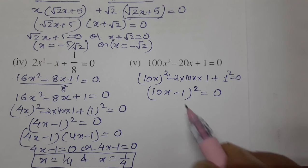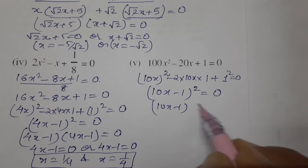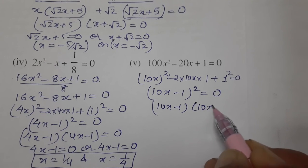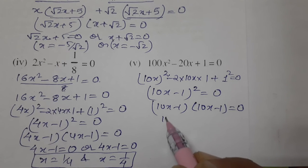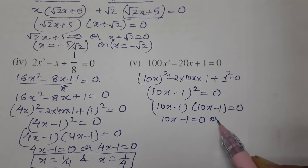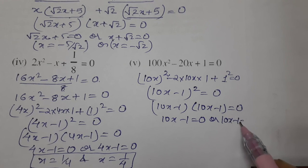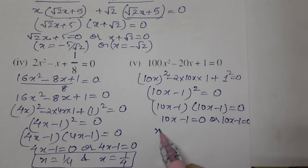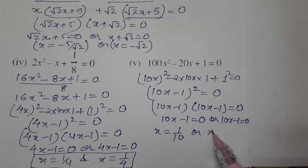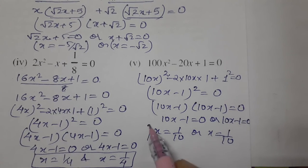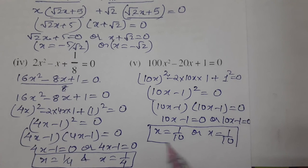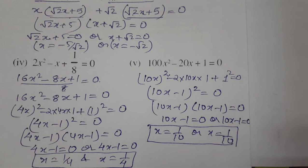So (10x - 1)(10x - 1) = 0. This means 10x - 1 = 0, so x = 1/10 and x = 1/10. Again we get repeated roots. Both roots are equal. So all five questions are complete. Hope you understood all the questions by factorization, middle term split, or identity-based methods. Thank you so much for watching the video.